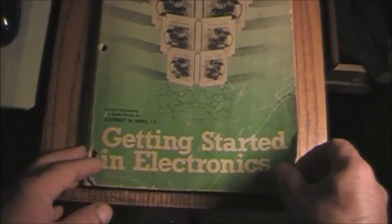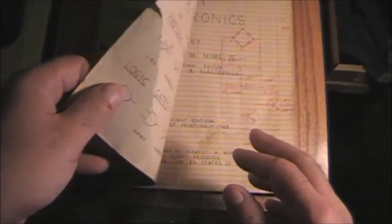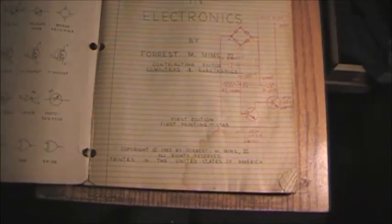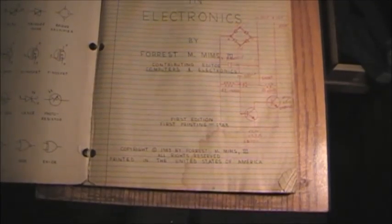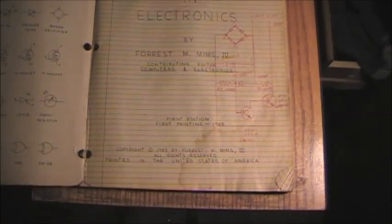Now somebody did some fancy doodling and there's Morse code written out here too. Anyway you'll see inside is what is really neat. The first page is all like it's handwritten and the first page says Getting Started in Electronics by Forrest M Mims III.